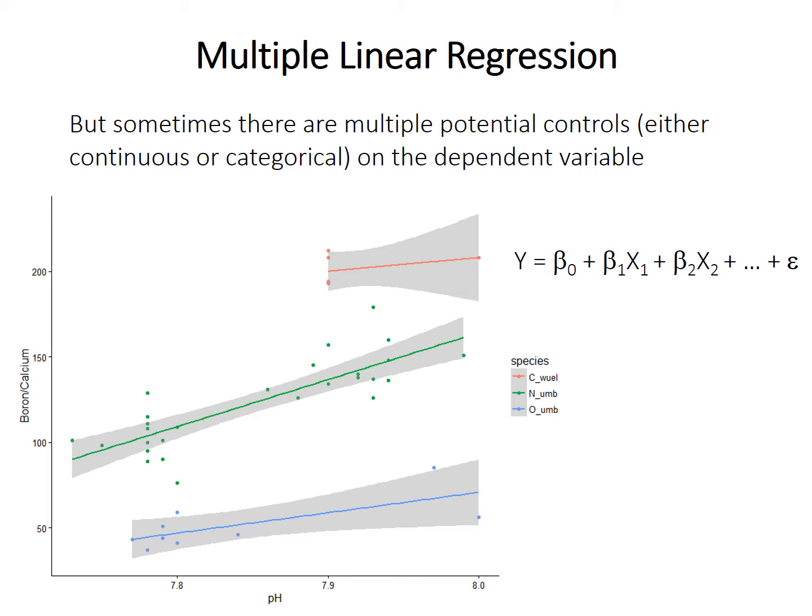Most of the time when you think of regression, you think of continuous variables. But note that one of our variables — species — is a categorical one. It is all right to include categorical variables as well as continuous ones as an independent variable in multiple regression. As an interesting aside, linear regression, as well as ANOVA and t-tests, are actually all special cases of a more generic method called general linear models.